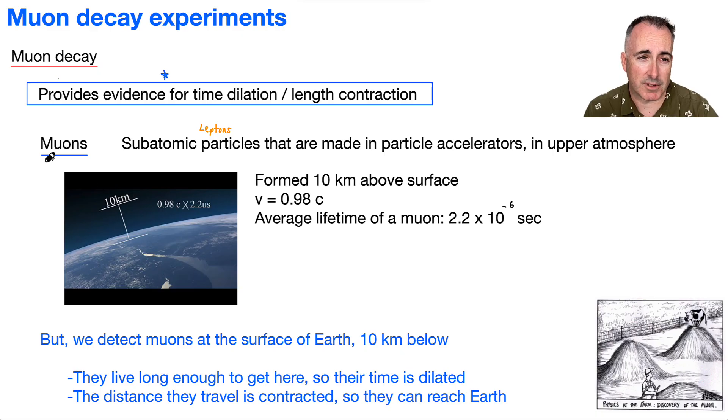It turns out they form from some other particles that are reaching us from other stars and other places. But basically, they come in here, and around 10 kilometers high in the atmosphere they're made. So they're formed about 10 kilometers above the surface.